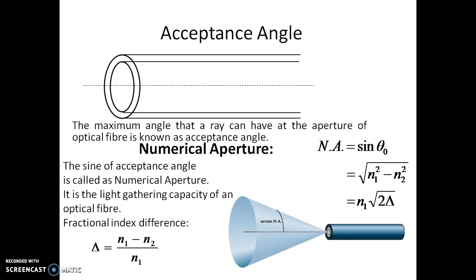As the angle of incidence at the aperture increases, the angle of incidence at the core-cladding interface decreases. The maximum angle that a ray can have at the aperture of an optical fiber is known as the acceptance angle. All the rays within this acceptance angle are accepted by the optical fiber. If the angle of incidence is greater than this acceptance angle, total internal reflection does not take place at the core-cladding interface.